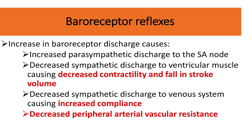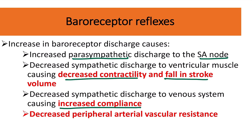The baroreceptor reflex: when baroreceptor discharge increases, it causes increased parasympathetic activity. This goes to the SA node and decreases heart rate. On the other hand, decreased sympathetic discharge to the ventricular muscle causes decreased contractility and a fall in stroke volume. Decreased sympathetic discharge to the venous system causes increased compliance — that is, increased diameter of the veins.